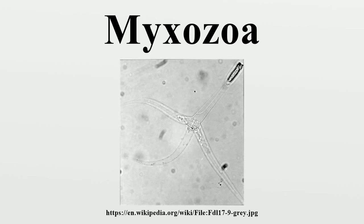Nevertheless, closer examination reveals that Buddenbrockia's longitudinal symmetry is not two-fold, but four-fold, casting doubt on this hypothesis. Further testing sourced the first three Hox genes found in previous research to the Bryozoan Cristatella mucedo, and the fourth to Northern Pike. This explained the confusion.